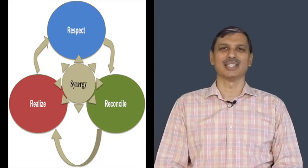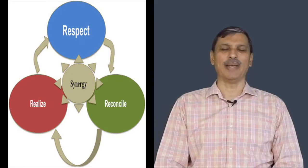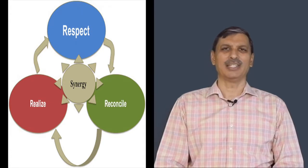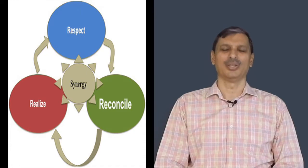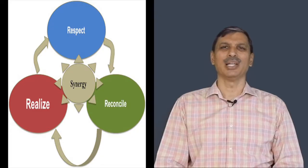There is a three-step process sequence that may be followed in order to obtain synergistic output or results in every kind of situation. The first step is that of respect, which is the art of locating value in any perspective or notion that a person holds. The second step is that of reconcile, or to combine all these perspectives together into a unitary whole, so as to finally realize the value that can be unlocked by integrating these different perspectives.